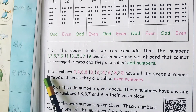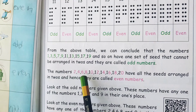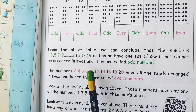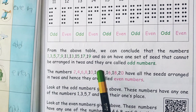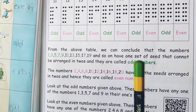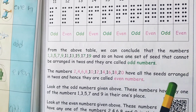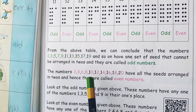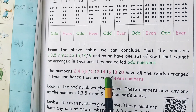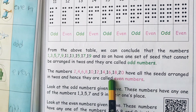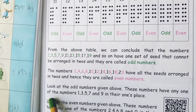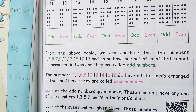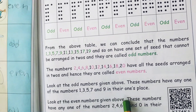The numbers 2, 4, 6, 8, 10, 12, 14, 16, 18, 20 have all seeds arranged in twos and hence they are called even numbers.